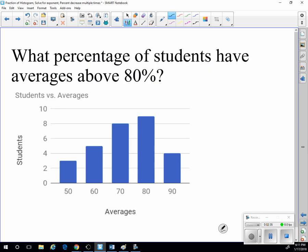What percentage of students have averages above 80%? Well, there's only those students, and that is 4 students. And then we need to know the total number of students. So here we have 3, here we have 5, here we have 8, and here we have 9. 8 plus 9 is 17, plus 2,